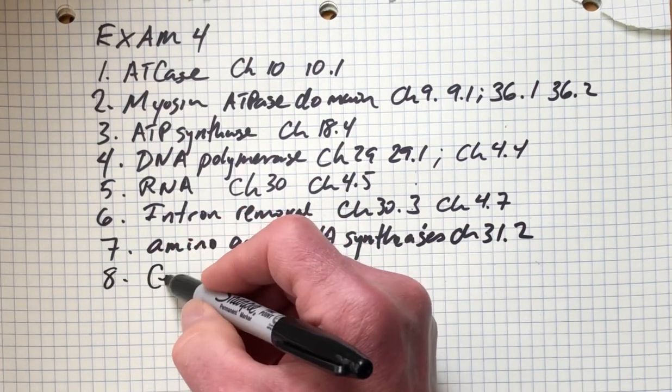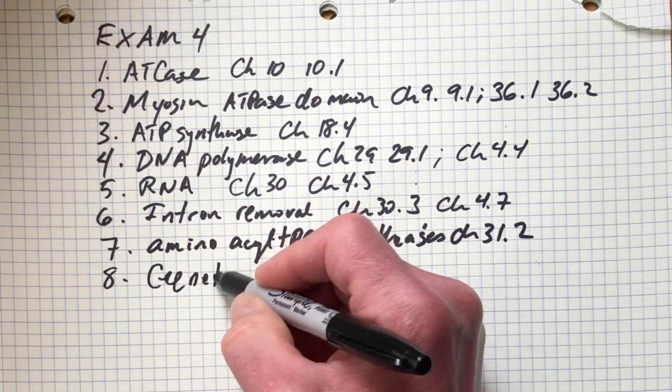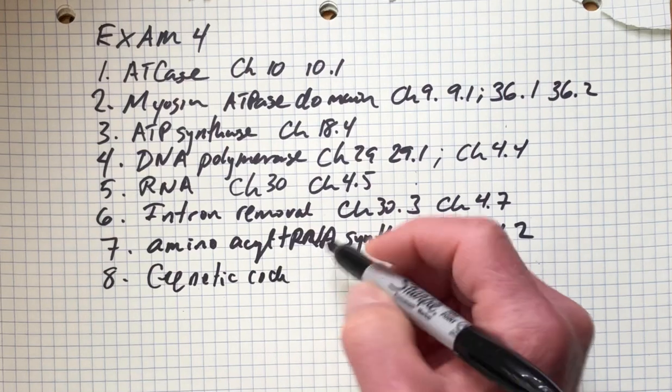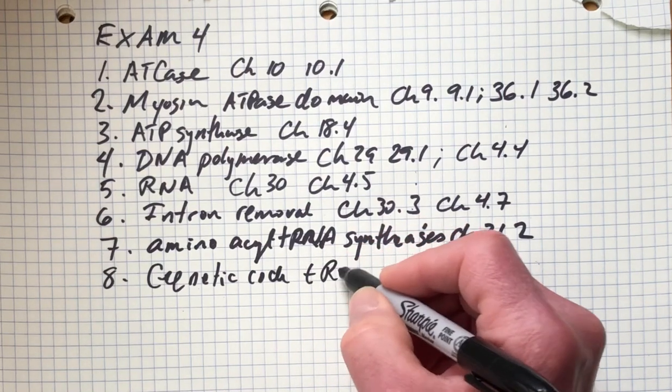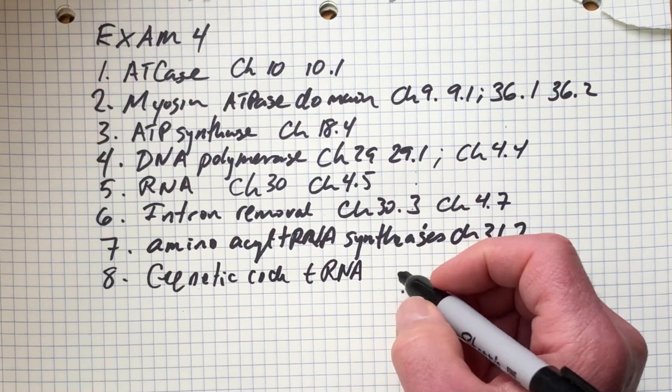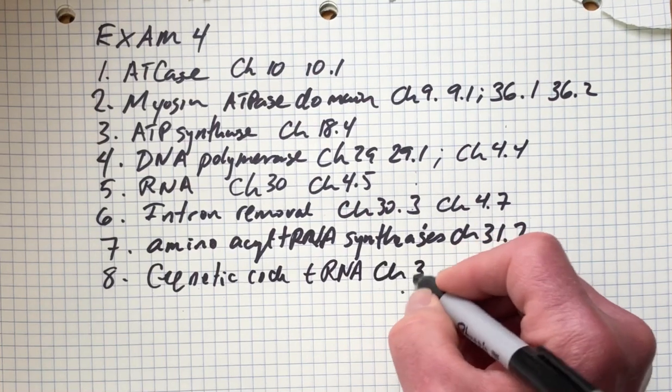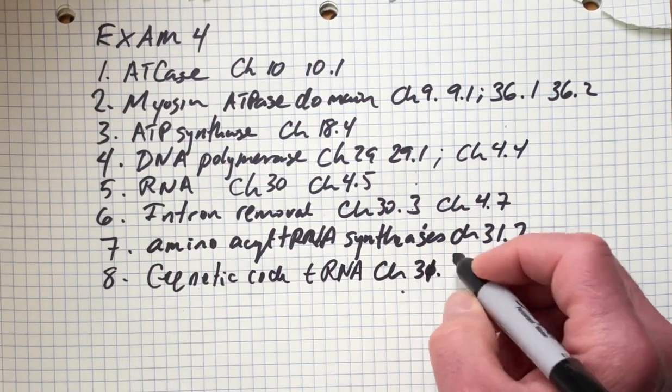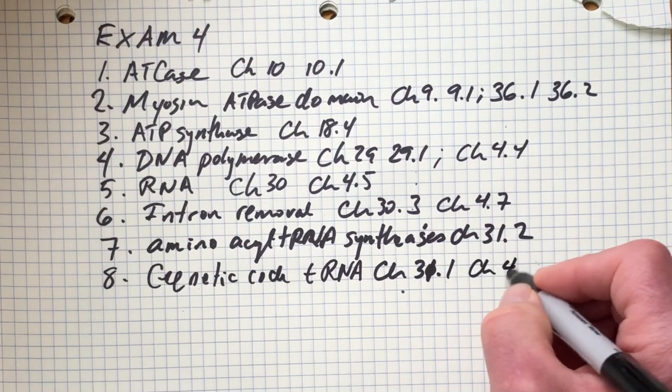We'll look at the structure of the genetic code itself. An important molecule here is the tRNA molecule. That's covered in chapter 31.1 and chapter 4.6.